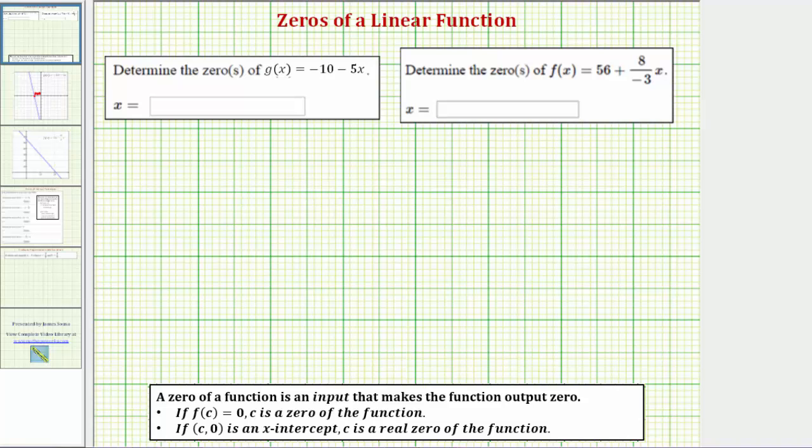that makes the function output, or function value, equal to zero. So if f(c) equals zero, then c is a zero of the function.